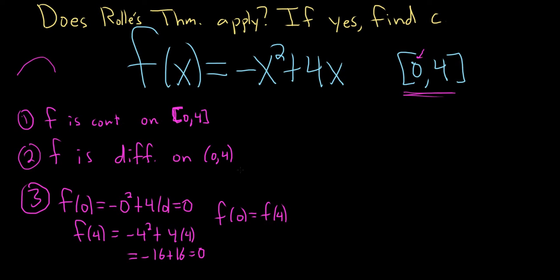So what Rolle's theorem says is that when all three conditions are satisfied, you can find some number which they call little c, such that the derivative is equal to 0, and that little c will be between 0 and 4. So now we just have to find c.